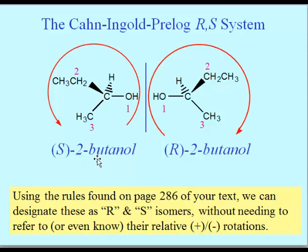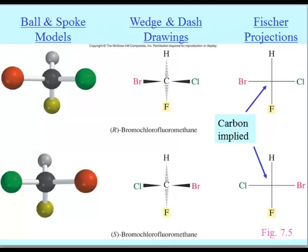R comes from the Latin word rectus, meaning right, and S comes from the Latin word sinister, which means left. Nowadays sinister means evil, but in the old days it simply meant left. So S and R mean left and right based on the arrows we've drawn. In principle, any chiral compound — because it has four different substituents on the carbon — requires us to rank substituents one through four by atomic number, so one enantiomer is always R and the other must be S.